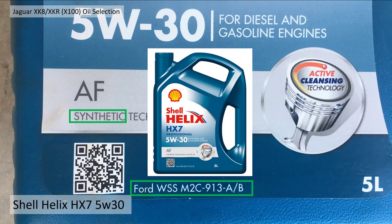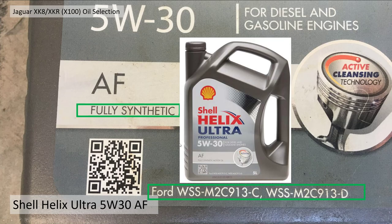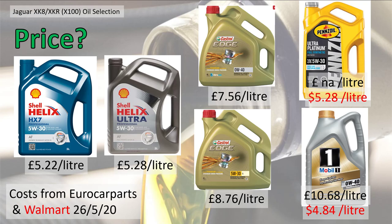The first oil I found was Shell Helix HX7 5W30 — it fulfils the WSS-M2C913-B spec at the B standard, which is what I need. It's synthetic but not fully synthetic. Doing a bit more background, I found a document stating that beyond grade B there are actually improved grades C and D, which are backwards compatible and fully synthetic — a massive improvement. So I looked for those oils and found Shell Helix Ultra 5W30 AF, which fulfils the spec at C and D level. Ironically, this is exactly the same oil I put in my other car — a Ford S-Max.